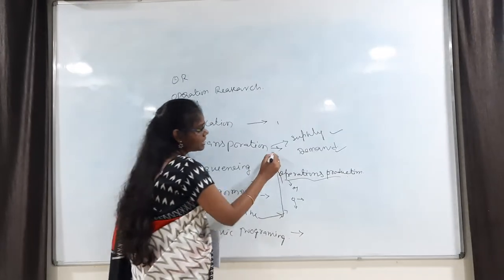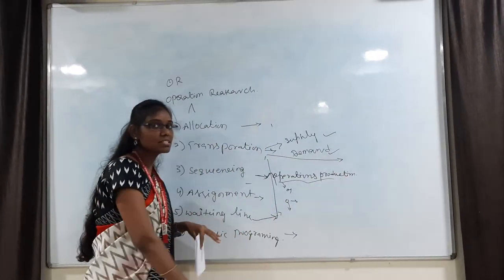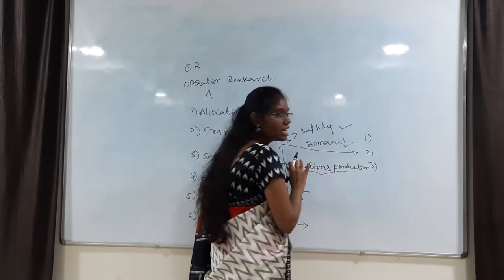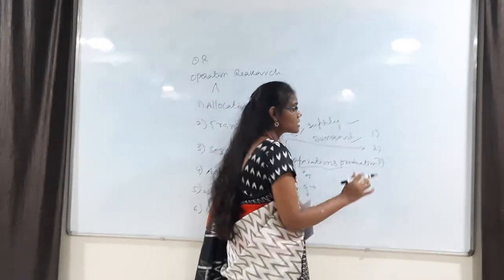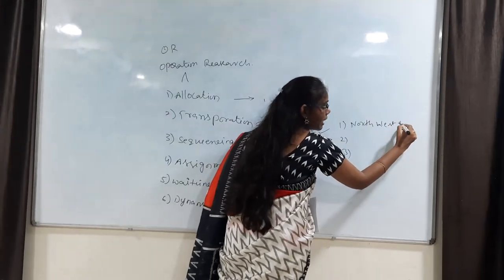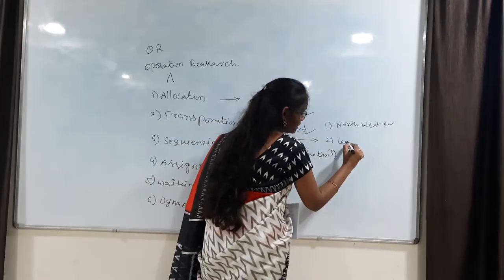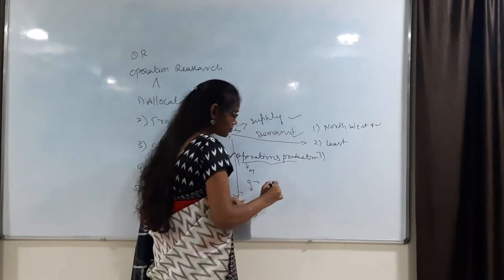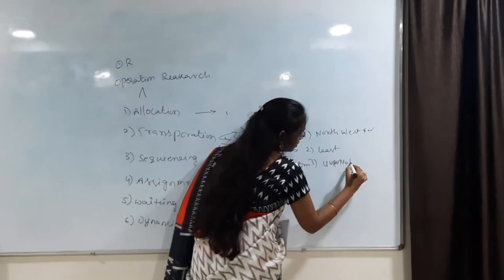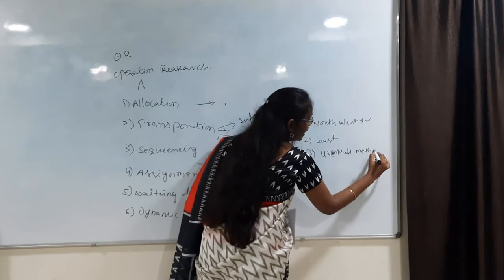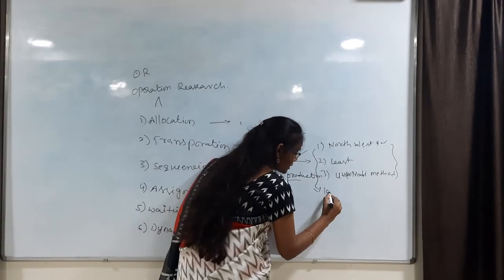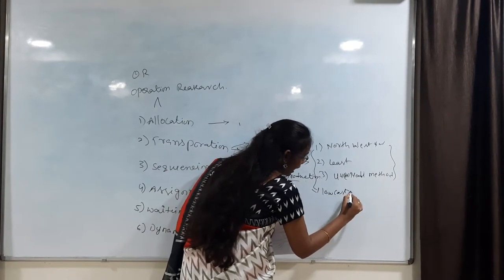Now let's go to the transportation problem. There are different methods for the transportation problem. Three types of methods: the first one is the North West Corner method, the second one is the Least Cost method, and the third one is the UV method or MODI method. These three methods all depend upon achieving low cost and high productivity or high benefit.